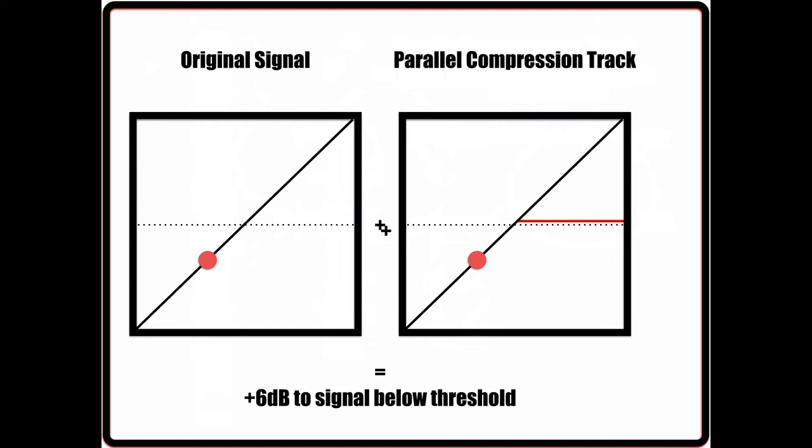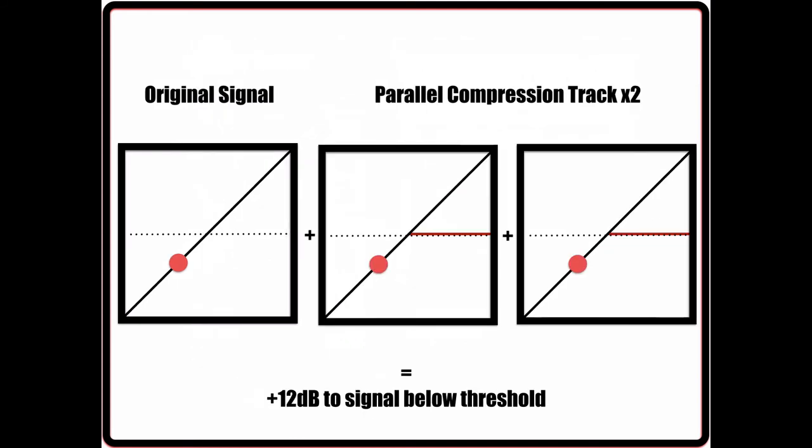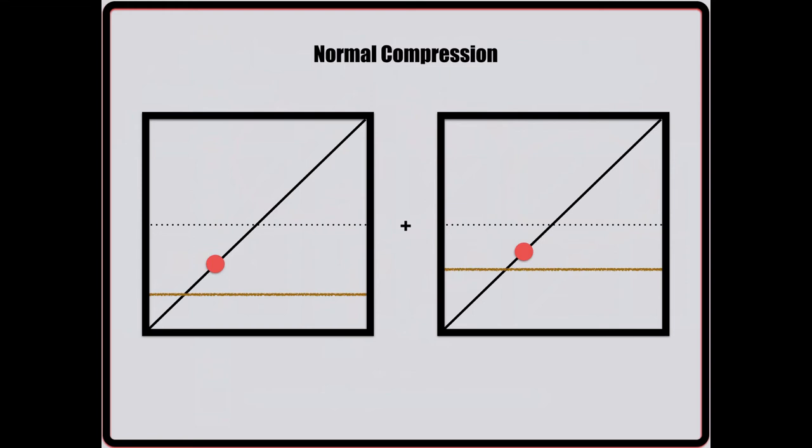What is really cool to note as well is that if you need even more level, you can simply add just another channel of parallel compression to achieve another 6 dB boost to the lowest signal levels. So I hope you can understand, through these illustrations, why this doesn't affect the noise floor in the same way as simply adding a compressor.